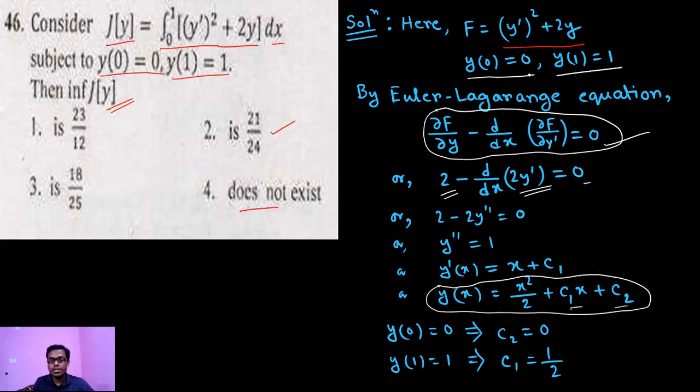Now put the boundary conditions. First boundary condition is y(0) equals to 0. If we put y(0) equals to 0, then we are getting c₂ equals to 0 from this extremal.